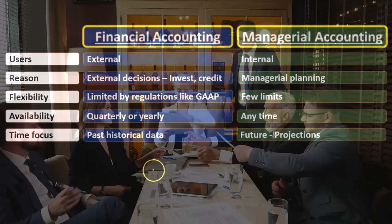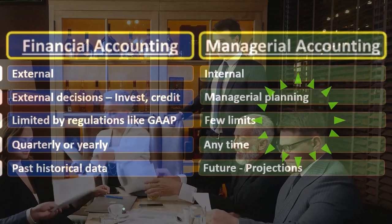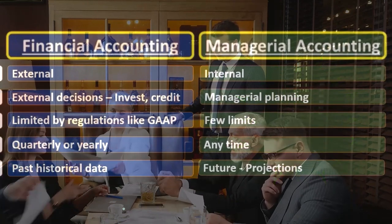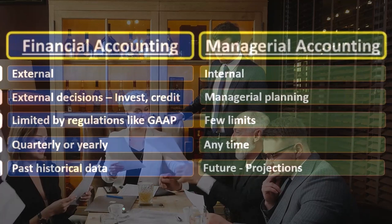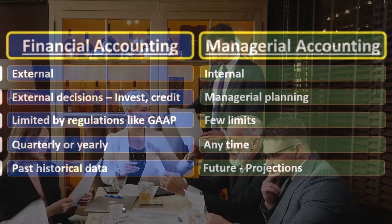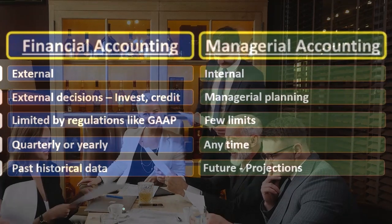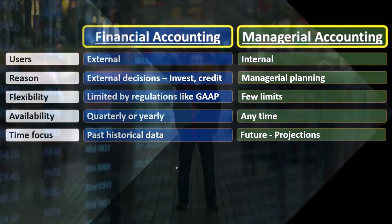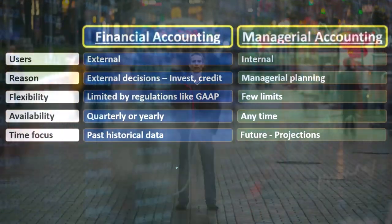Managerial accounting, when we put this information together, it usually has a future focus. We're trying to focus on future decision-making. So when we put together internal reports, whatever we need to do from an internal standpoint, we're typically thinking about what we can do for the future in this place so that we can increase production.